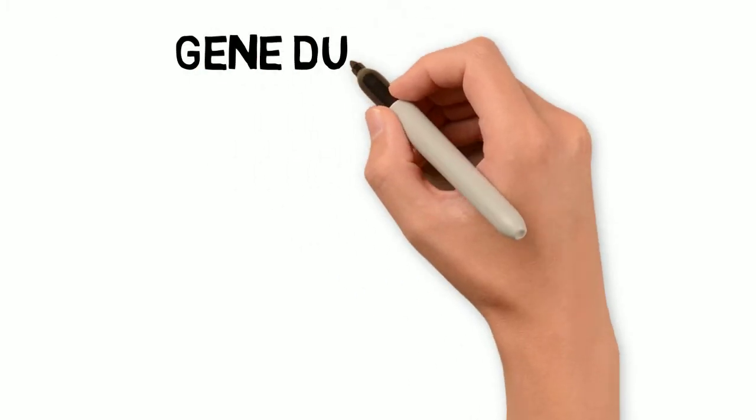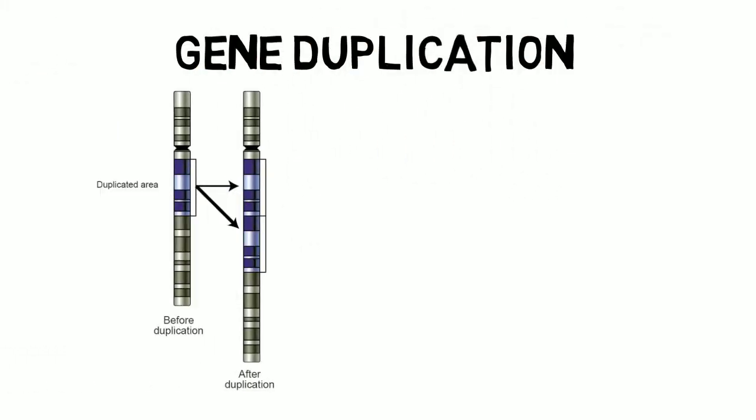Gene duplication is the process by which a region of DNA coding for a gene is duplicated.